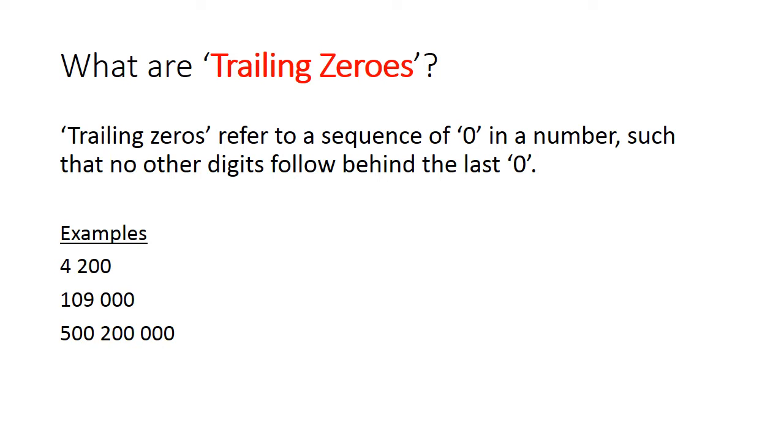In the first example, the number 4200, you can see that the number ends with two zeros. We can say that there are two trailing zeros.